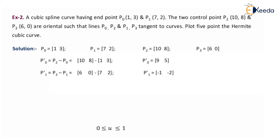Solution: P0 = (1, 3), P1 = (7, 2), P2 = (10, 8), P3 = (6, 0). P0' = P2 - P0 = (10, 8) - (1, 3) = (9, 5). P1' = P3 - P1 = (6, 0) - (7, 2) = (-1, -2). So P0 x = 1, P0 y = 3, P1 x = 7, P1 y = 2, P0' x = 9, P0' y = 5, P1' x = -1, P1' y = -2.